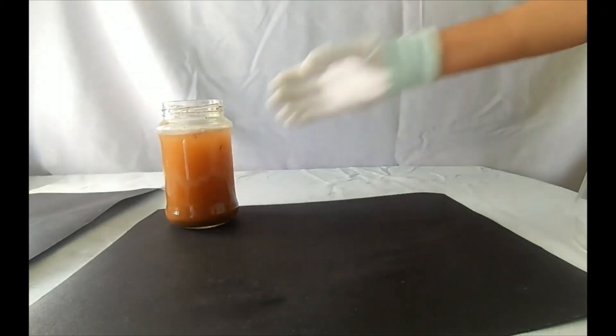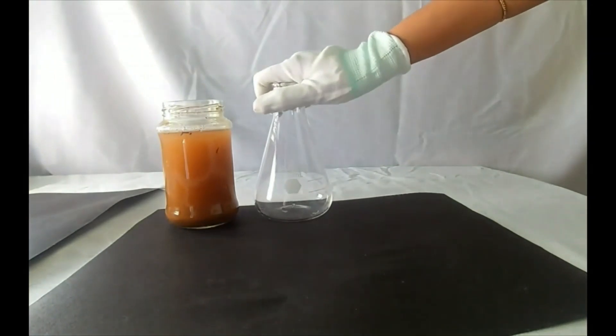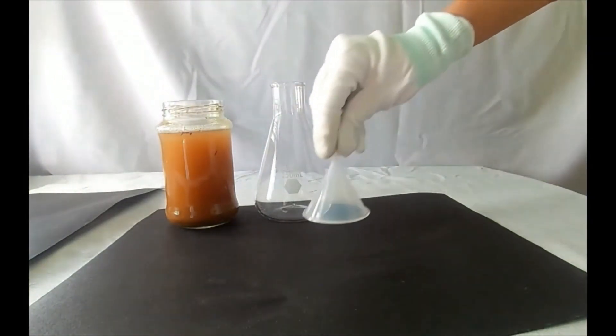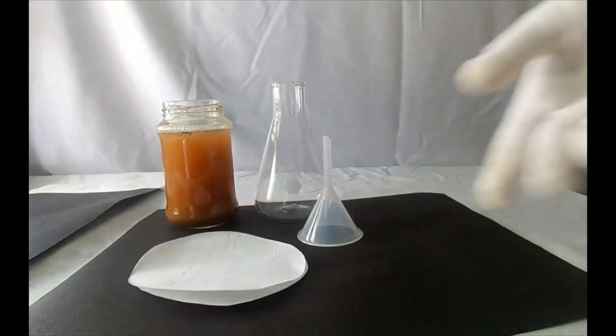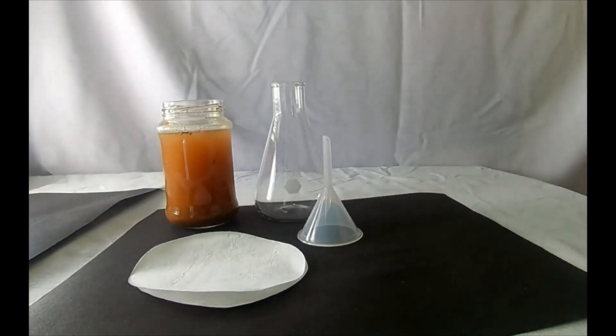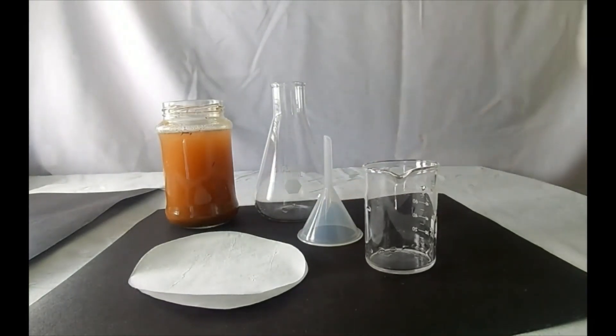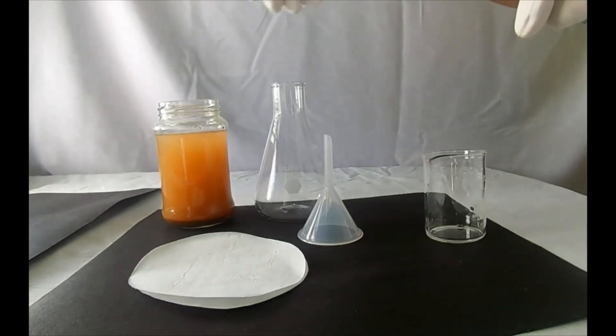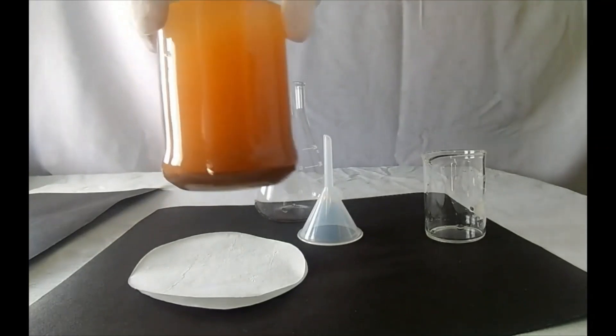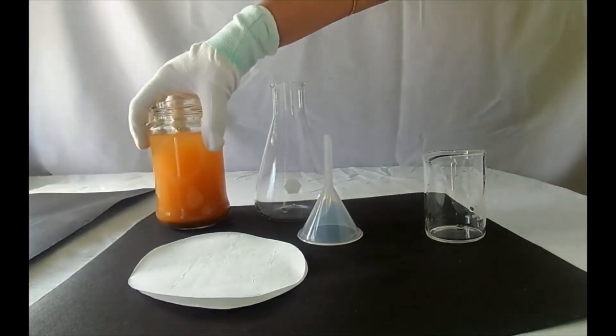Take muddy water and keep it aside for some time. Take a conical flask, funnel, filter paper, and a beaker. Now the mud particles have settled at the bottom. This process is known as sedimentation.